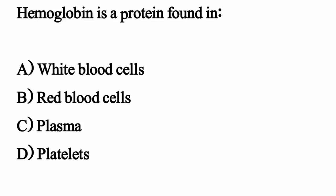Hemoglobin is a protein found in — the correct option is Option B, red blood cells.